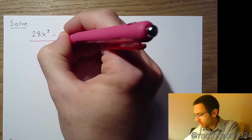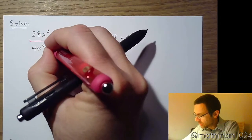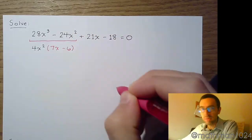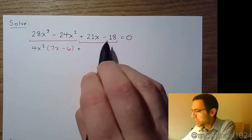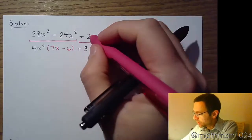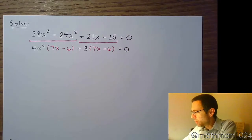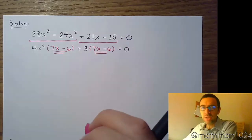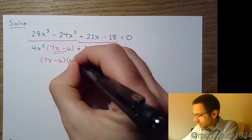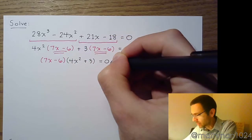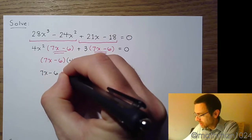In the first group, there is a common factor of 4x squared, which leaves us with 7x minus 6. In the second group, we lead off with a plus, and the common factor for 21x and 18 is 3. Factoring that out gives us 7x minus 6, just like from the first group. We want these groups to be exactly the same so we can finish factoring. So 7x minus 6 is the common factor, times 4x squared plus 3. Now that this is factored, we can use the zero factor theorem.